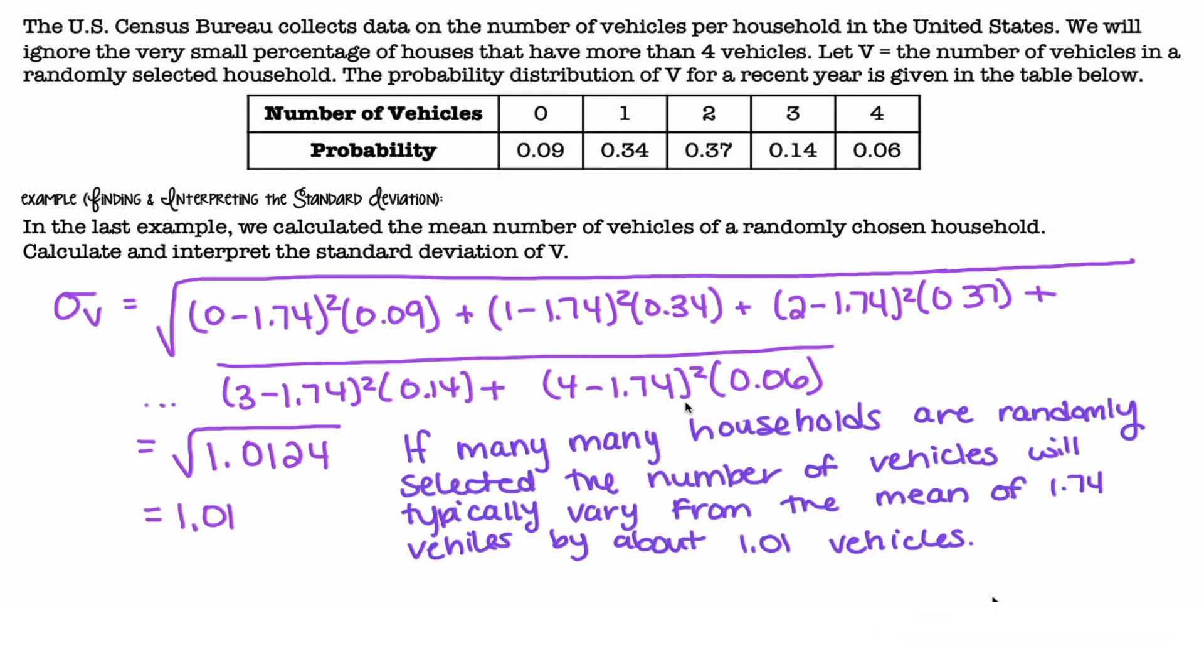And if we interpreted it, it would be if many, many households were randomly selected, the number of vehicles will typically vary from the mean of 1.74 vehicles by about 1.01 vehicles.